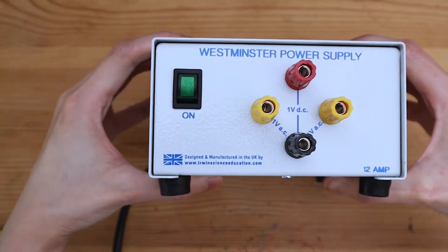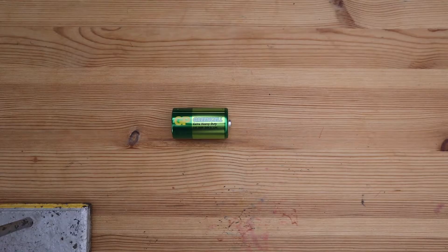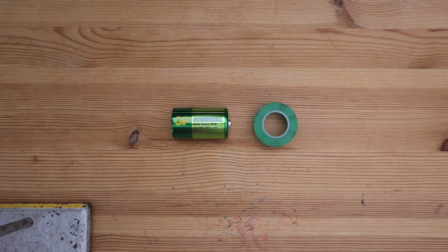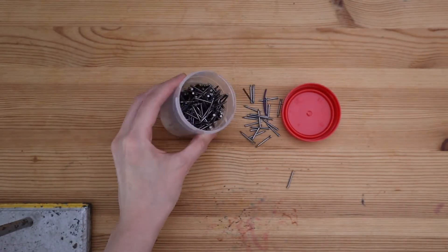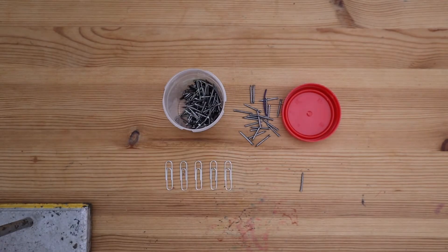If you don't have a power supply, you can use a battery with some electrical tape. I also got some steel pins to test my homemade electromagnet. Alternatively, you can use paper clips.